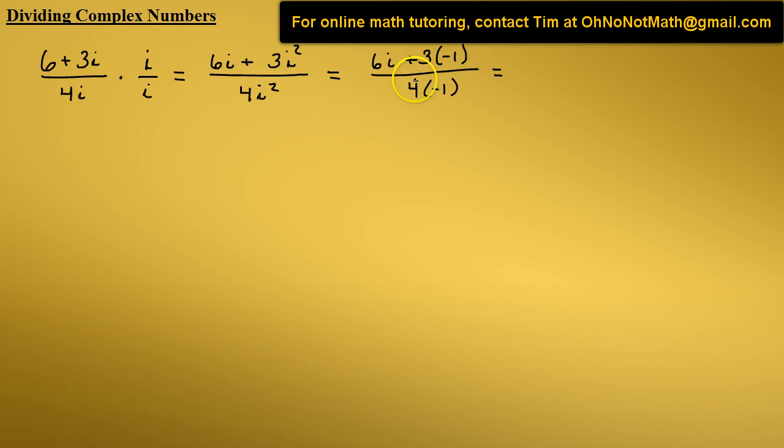Let's continue to simplify. We have 6i plus 3 times negative 1 is negative 3, all over 4 times negative 1, which is negative 4.